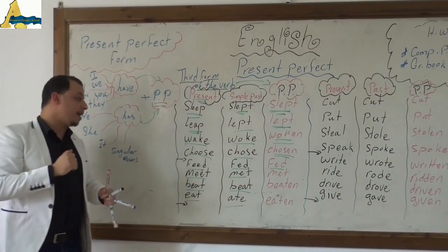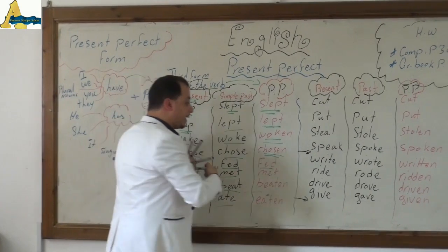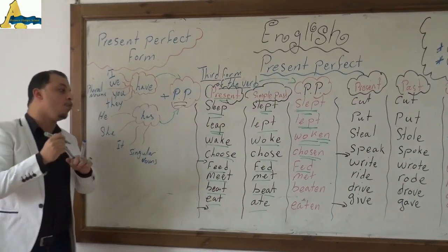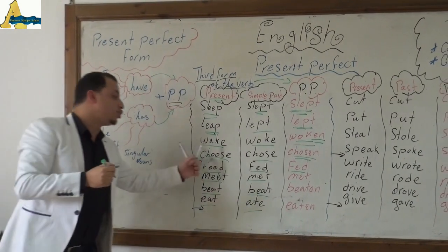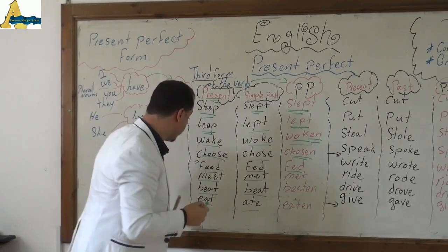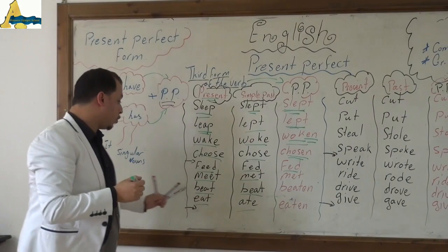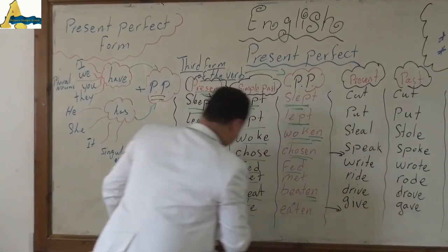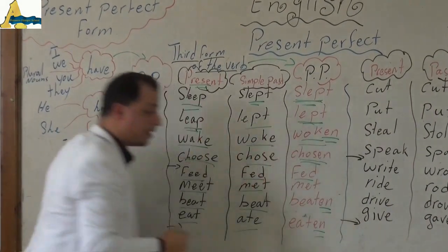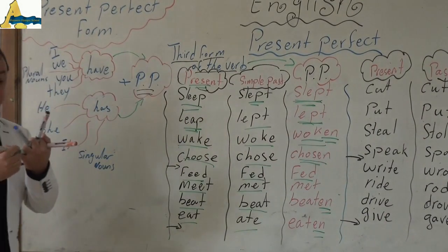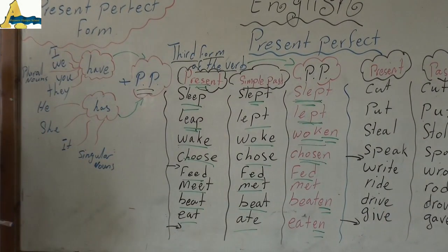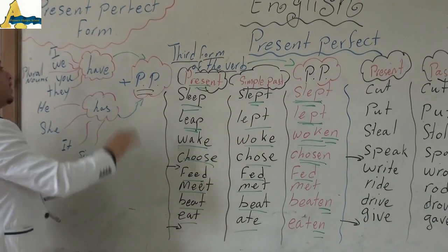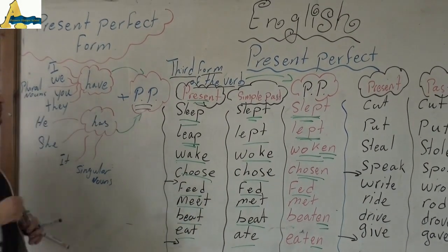There is another family which ends with '-en': wake, woke, woken. Choose, chose, chosen. We also have beat, beat, beaten. Eat, ate, eaten. Now you have known the third form — it's the past participle form. This is the form we are going to need in order to place it after 'have' and 'has'.